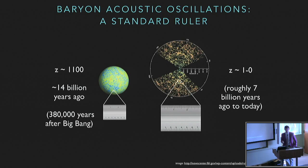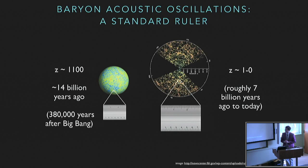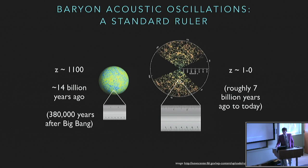These density fluctuations actually seed the late-time formation of galaxies. The cosmic microwave background is really the blueprint for the universe, and we see the universe at late times — roughly 7 billion years ago to today, or redshift 1 to 0. This diagram on the right is a map of galaxies, where each dot is an enormous galaxy with the mass of roughly 10^14 suns. These galaxies have a characteristic pattern in their clustering, and by measuring that pattern at different times, we can compare the ruler's scale and measure how much the universe has stretched — this is the basic idea of the BAO.